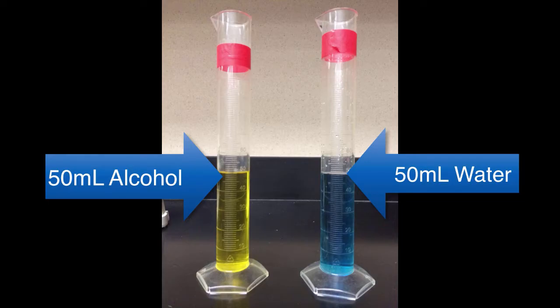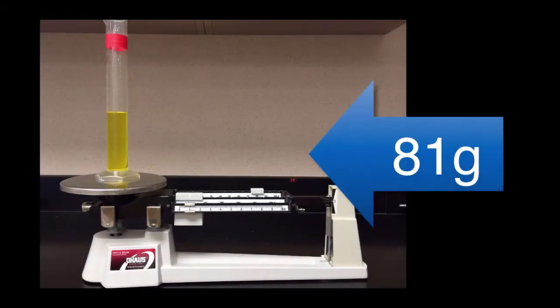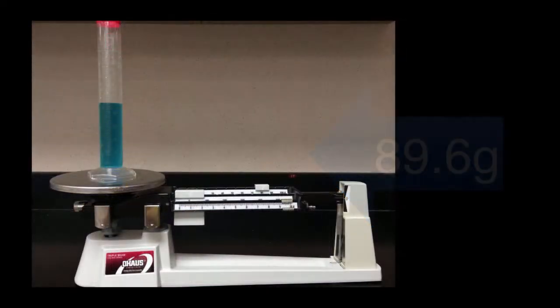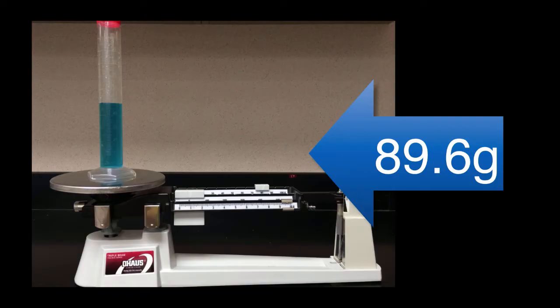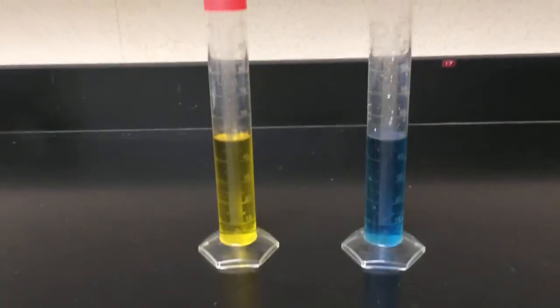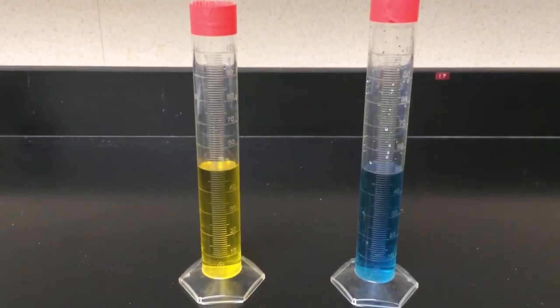In this demonstration, we have 50 milliliters of alcohol and 50 milliliters of water. The water's dyed blue and the alcohol's dyed yellow. We measured the mass and the mass of the alcohol was 81 grams and the mass of the water was 89.6 grams. So even though they were the same volume, the mass of the water was greater.